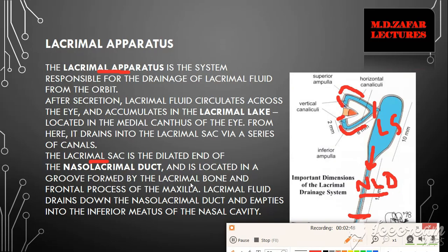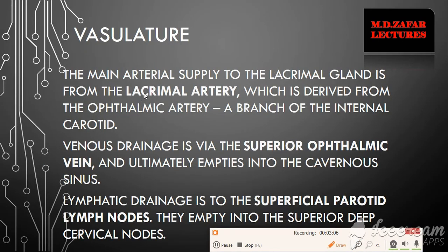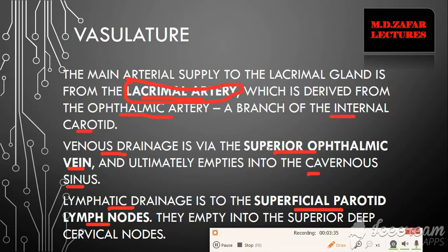The lacrimal sac is present in the groove of the lacrimal bone and the frontal process of the maxilla. Regarding arterial supply, it is the lacrimal artery, derived from the ophthalmic artery, which is a branch of the internal carotid. Venous drainage is through the superior ophthalmic vein, ultimately entering the cavernous sinus. Lymphatic drainage is through the superficial parotid lymph nodes.